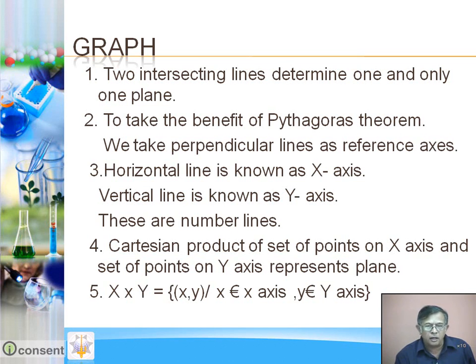In set theory, we have considered Cartesian product. The plane is a set of points, and these points represent the ordered pairs of the cross product of X and Y axis.